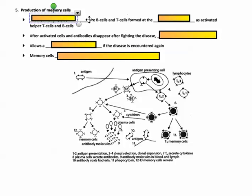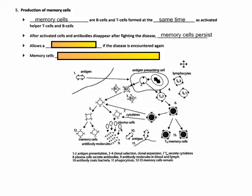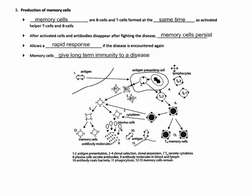At the end, we have memory cells — some of those B cells and T cells are left over and called memory cells. This is the basis of how immunity works. Once you've spent energy making a clone of the correct B cells for a particular invader — say chickenpox — a few stick around so that the next time that pathogen appears, you can launch an immune response really fast because you already have a high concentration of the correct antibody. Memory cells allow for rapid response and give long-term immunity.